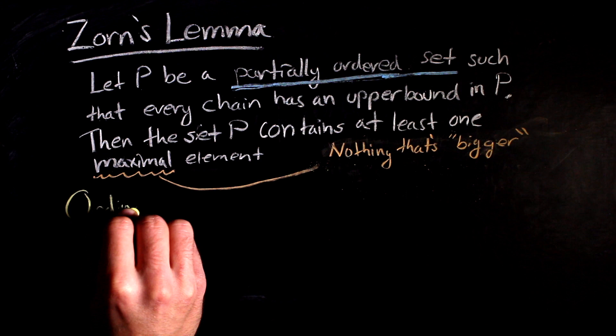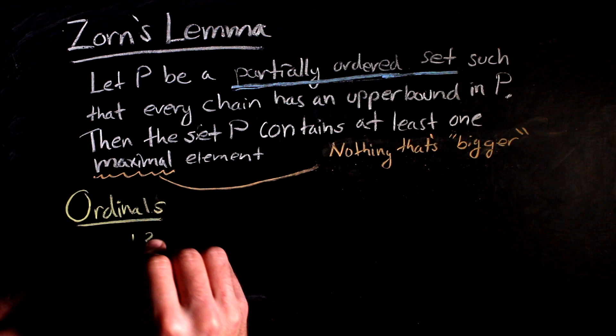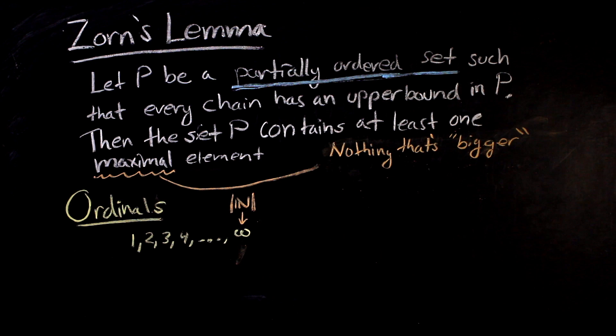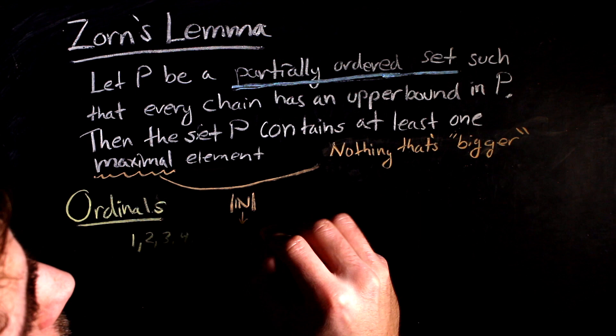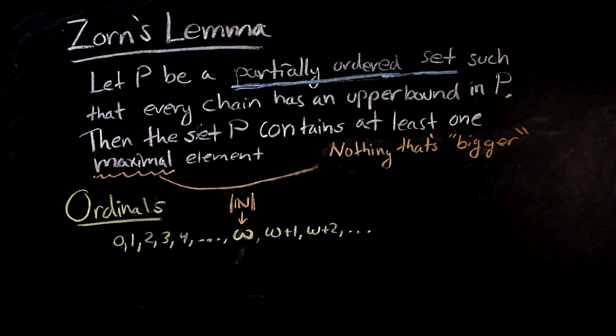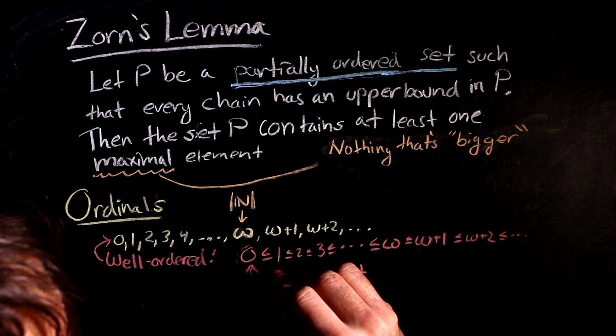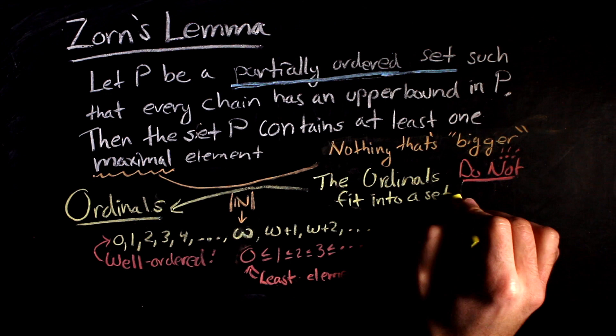The ordinals are a generalization of the natural numbers. So we have 1, 2, and 3, all the way up to omega, which is the symbol that denotes the size of the natural numbers. After omega, we just continue counting as usual. Omega plus 1, omega plus 2, omega plus 3, and so forth. First, this collection is well-ordered, which just means that there is a least element for every collection of ordinals. And second, that there are more ordinals than there can be elements in any set, because there is an ordinal for every possible size of a set.